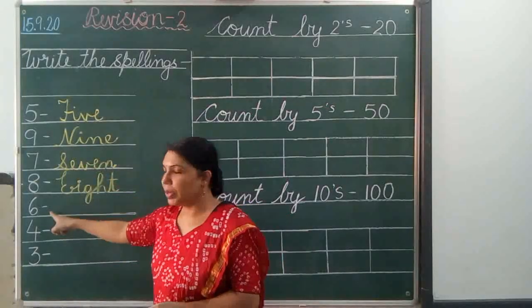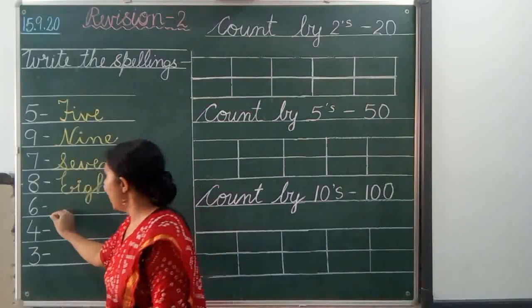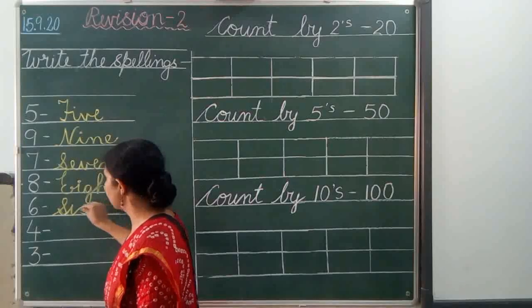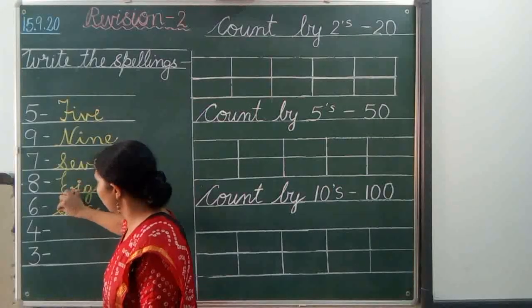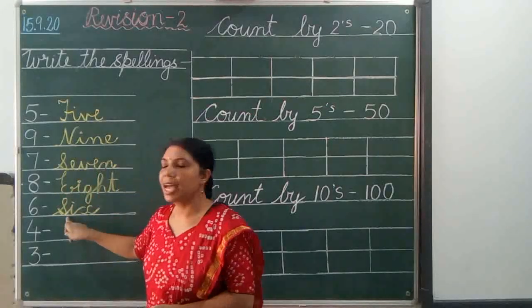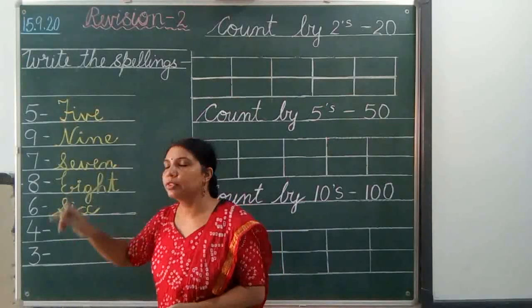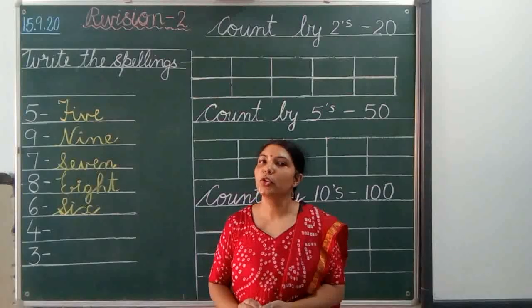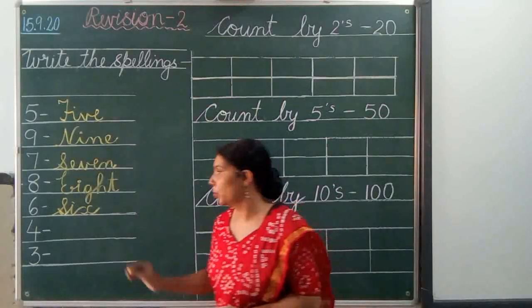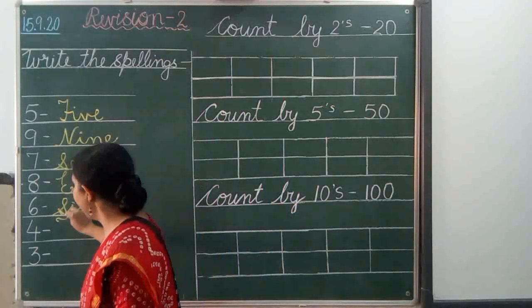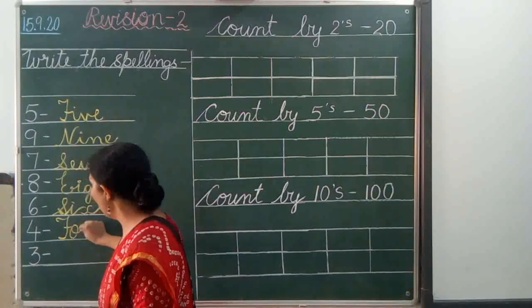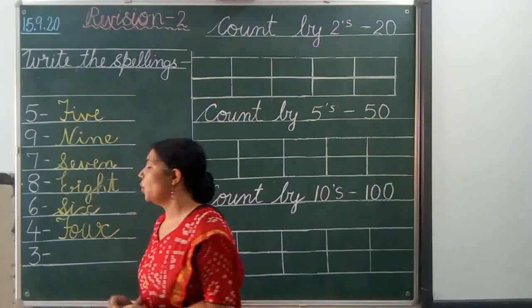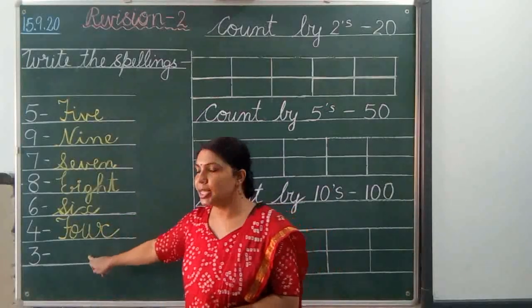This is number 6. S-I-X, 6. What is the spelling of 4? F-O-U-R, 4. Let us write F-O-U-R, 4.